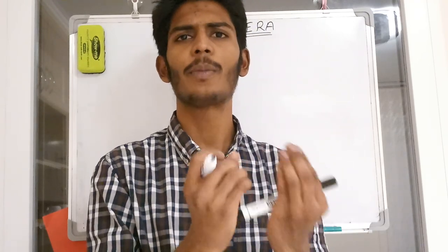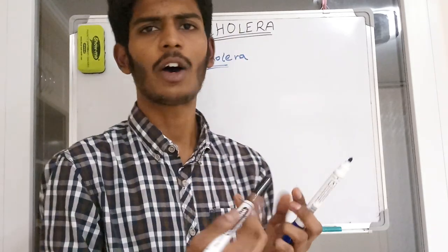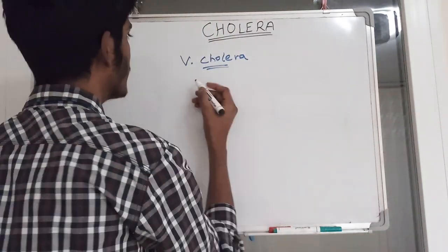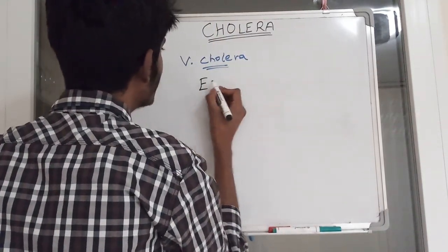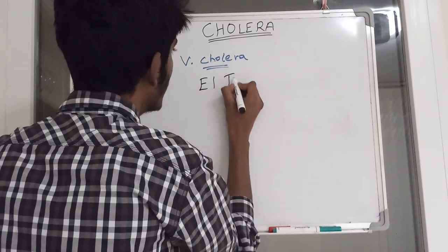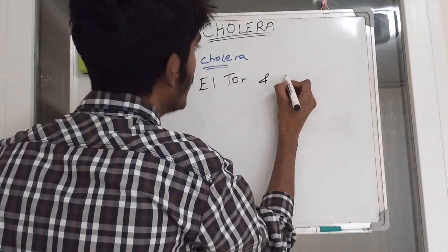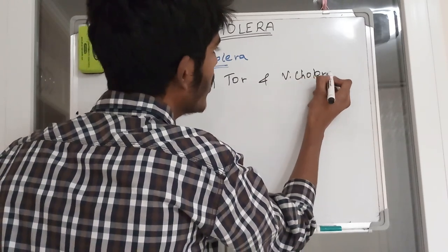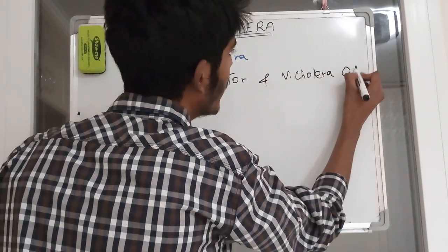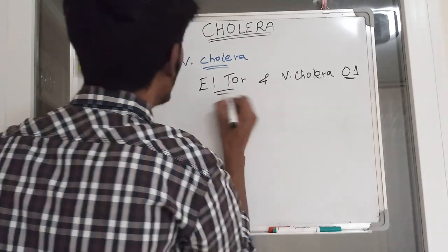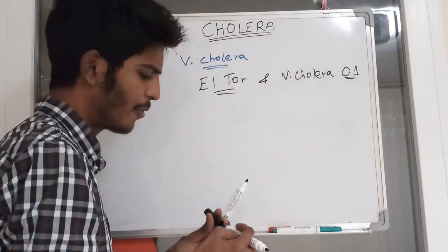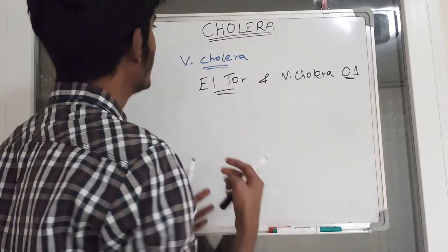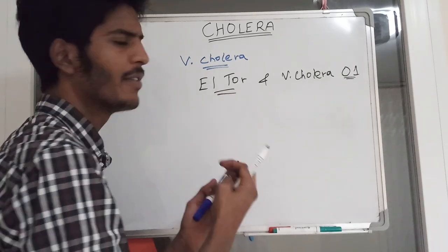Vibrio cholerae has many subtypes, but there are two major ones. One is O139 and the other one is Vibrio cholerae O1. These are the major epidemic strains found in recent days which cause severe symptoms.